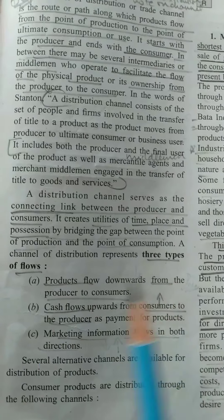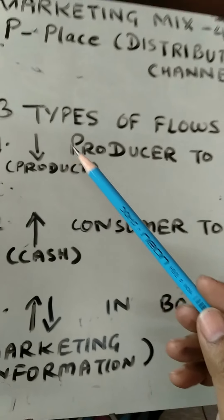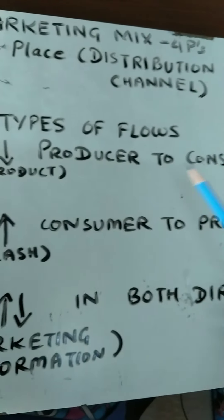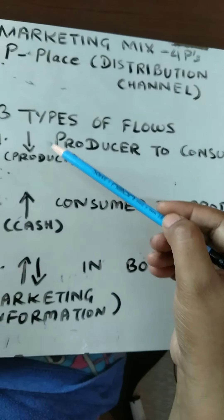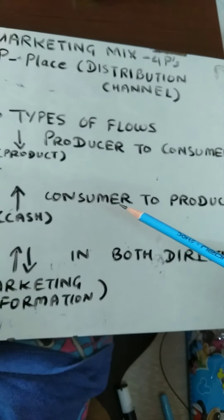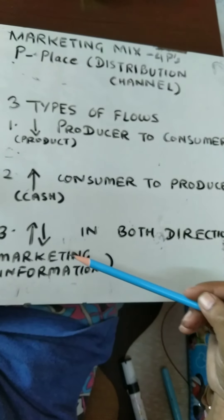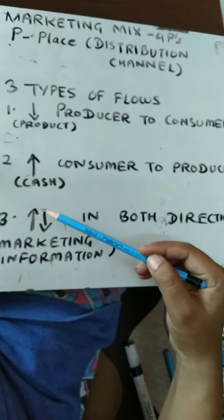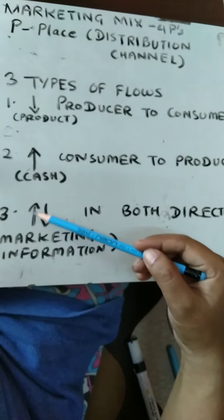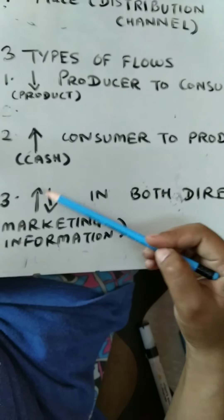Within a distribution channel there are three types of flows. First, the product flows downward — from producer to consumer. Second, cash flows upward — from consumer back to producer. Third, marketing information flows in both directions: firms convey information to consumers, and consumer preferences, tastes, and choices are also conveyed back to the producer — a dual flow of information.